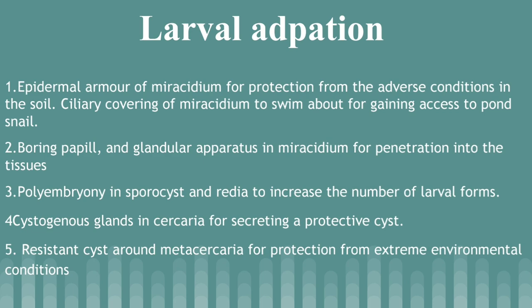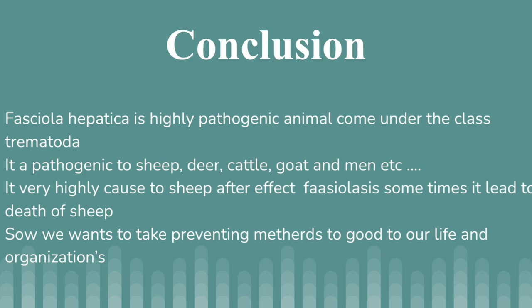In conclusion, Fasciola hepatica is a seriously pathogenic animal belonging to class Trematoda. It is pathogenic to sheep, fox, deer, elephant, man, and ox. It is highly damaging to sheep and cattle, and after infection, sheep may sometimes die. Therefore, take preventive measures to protect both our lives and those of other organisms.